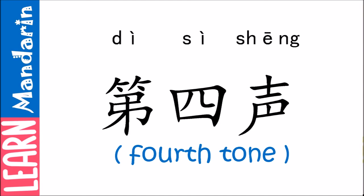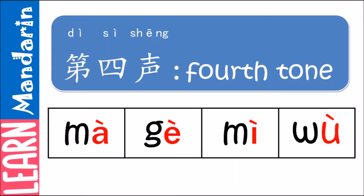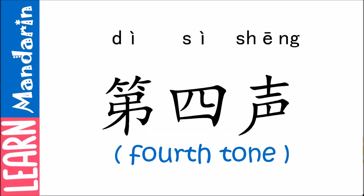The fourth tone looks like a dropping diagonal line. The tone starts from high and drops sharply, which sounds like an angry tone. Let's try it out.